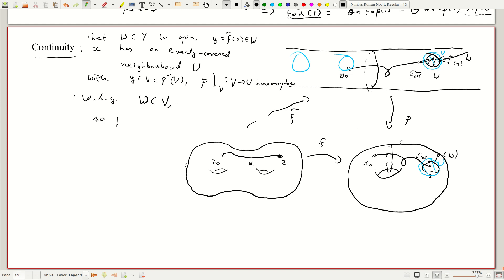So p of w, this is contained in u is open, not v, but u is open. So nice. Now we know f is continuous. That means I can find a neighborhood.